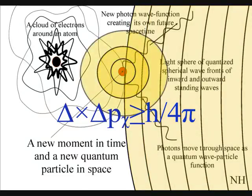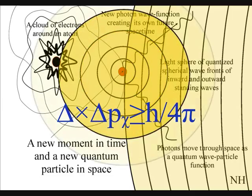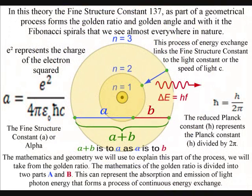The mathematics and geometry we will use to explain this part of the process we will take from the golden ratio. The mathematics of the golden ratio is divided into two parts a and b. This can represent the absorption and emission of light photon energy that forms a process of continuous energy exchange.